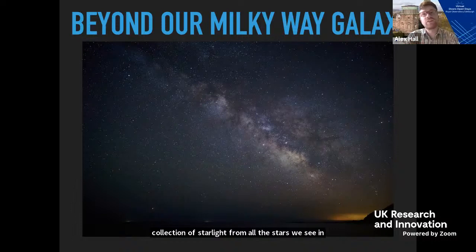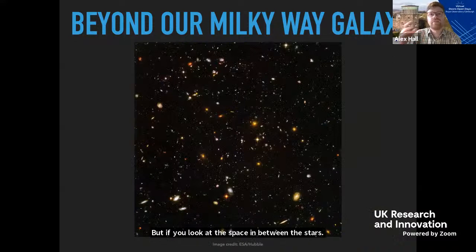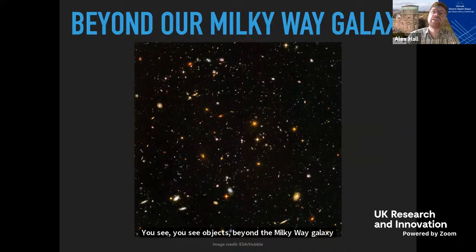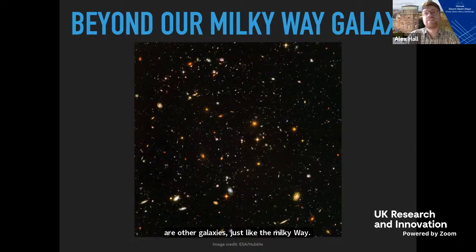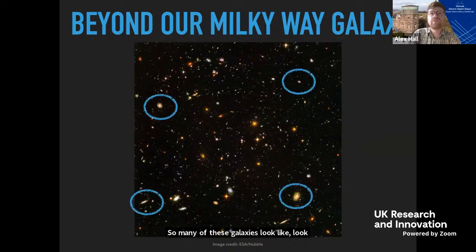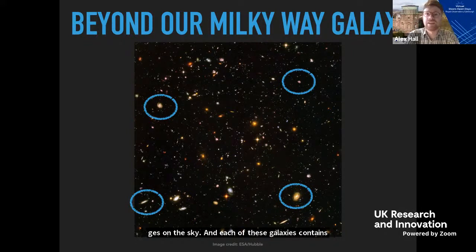If you look at the space in between the stars, you see objects beyond the Milky Way galaxy. This is a very famous image taken by the Hubble Space Telescope — we're looking at space beyond the galaxy. Most of the objects in this picture are not stars; they are other galaxies, just like the Milky Way. Many of these galaxies look like disks with spiral arms. Each of these galaxies contains billions of stars just like our sun, and billions of planets potentially just like Earth.